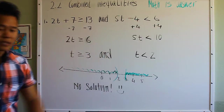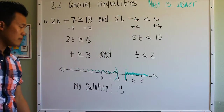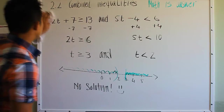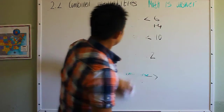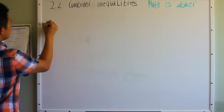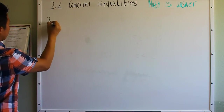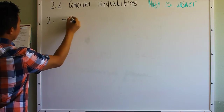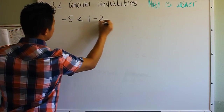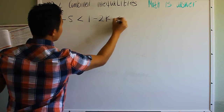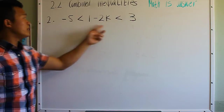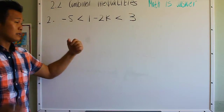That's an 'and' example. Let me give you another example of two inequalities joined with the word 'and'. Another way to write two inequalities joined with 'and' is to write them together in the same expression — a condensed form.